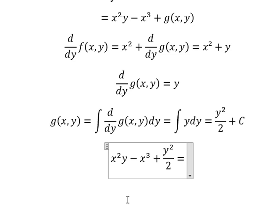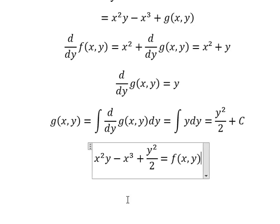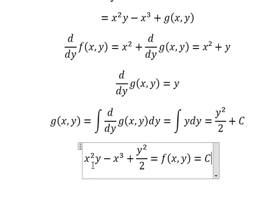And we know that this one equals to f(x,y). f(x,y) equals to C, and now we can simplify like this: x squared y minus x cubed plus y squared over 2 equals to f(x,y) equals to C.